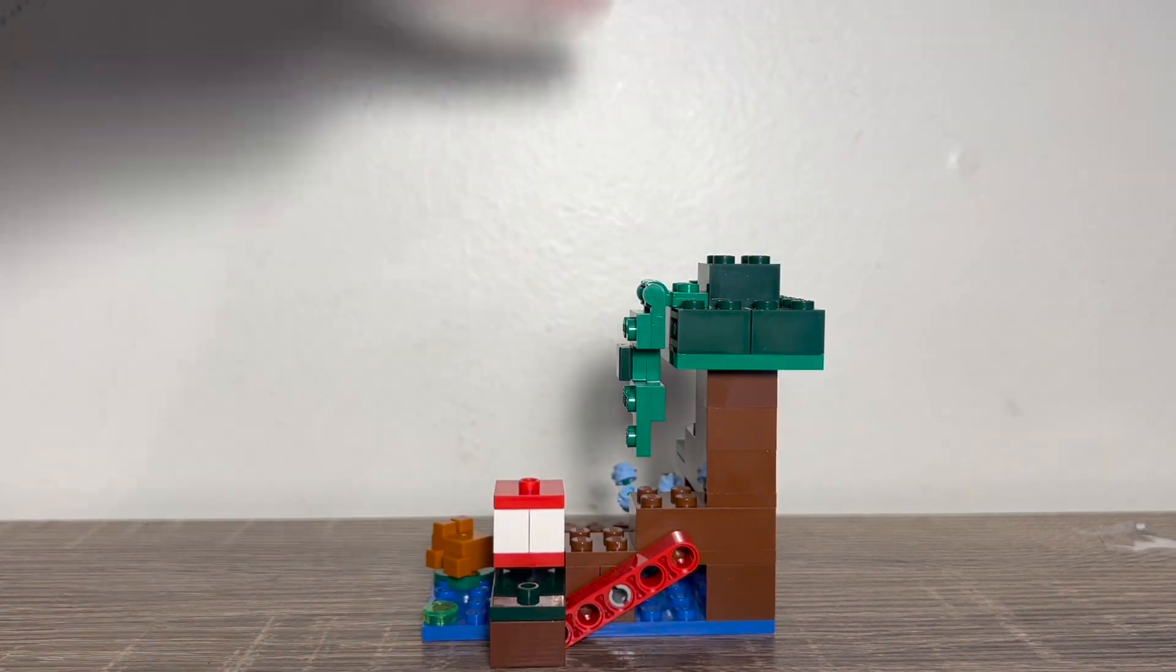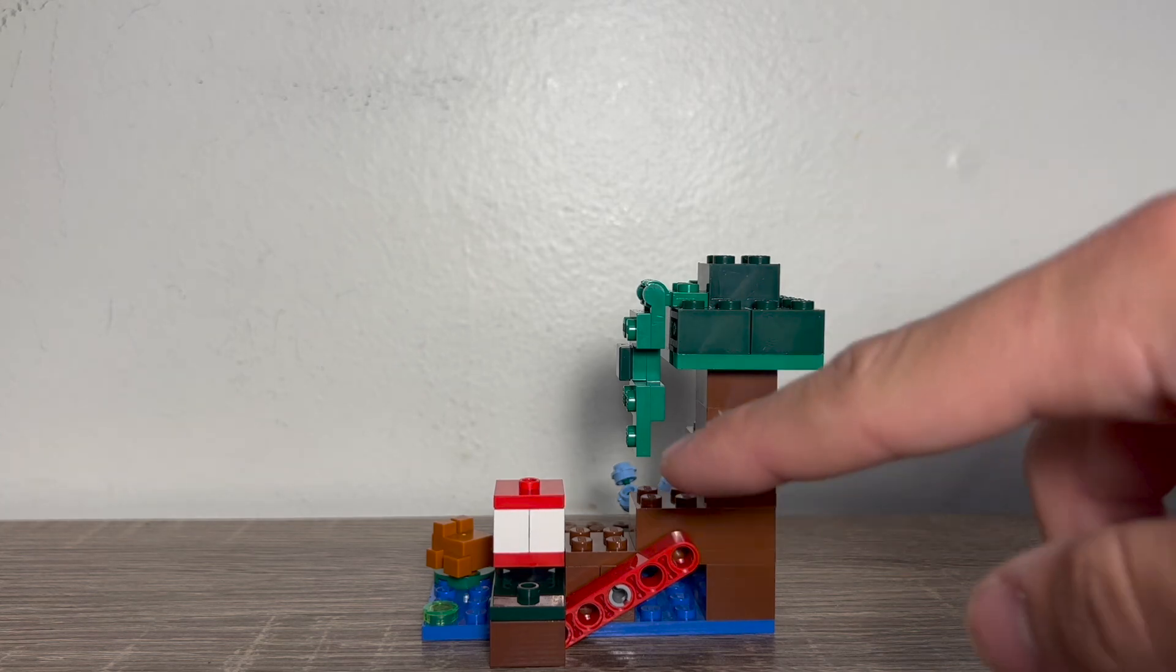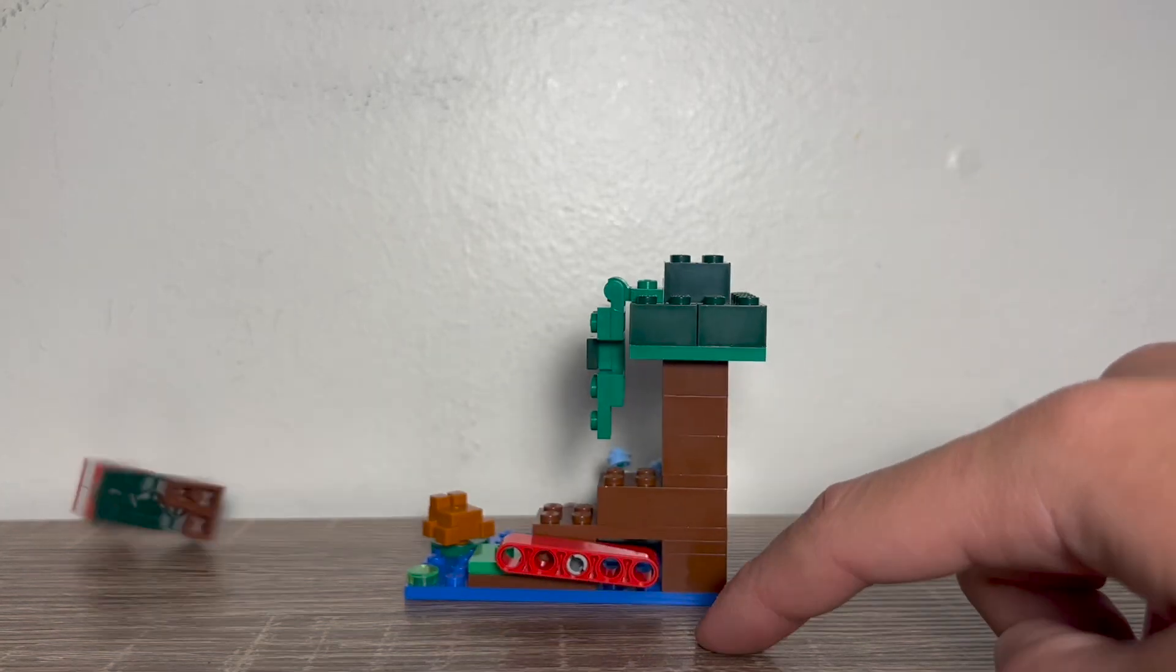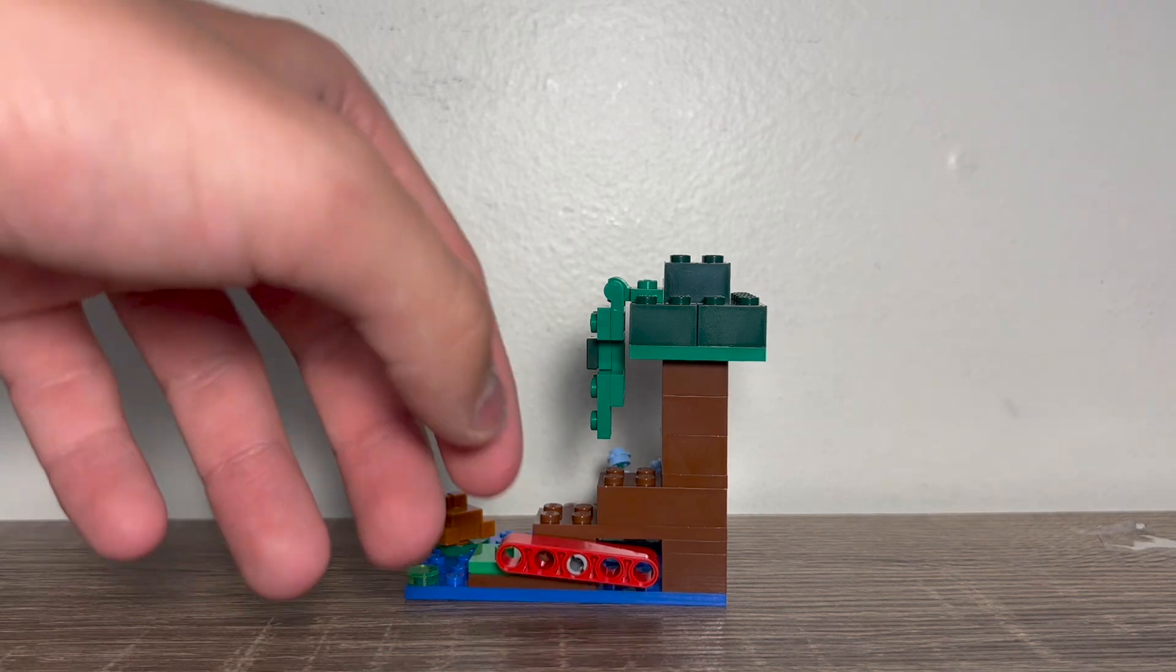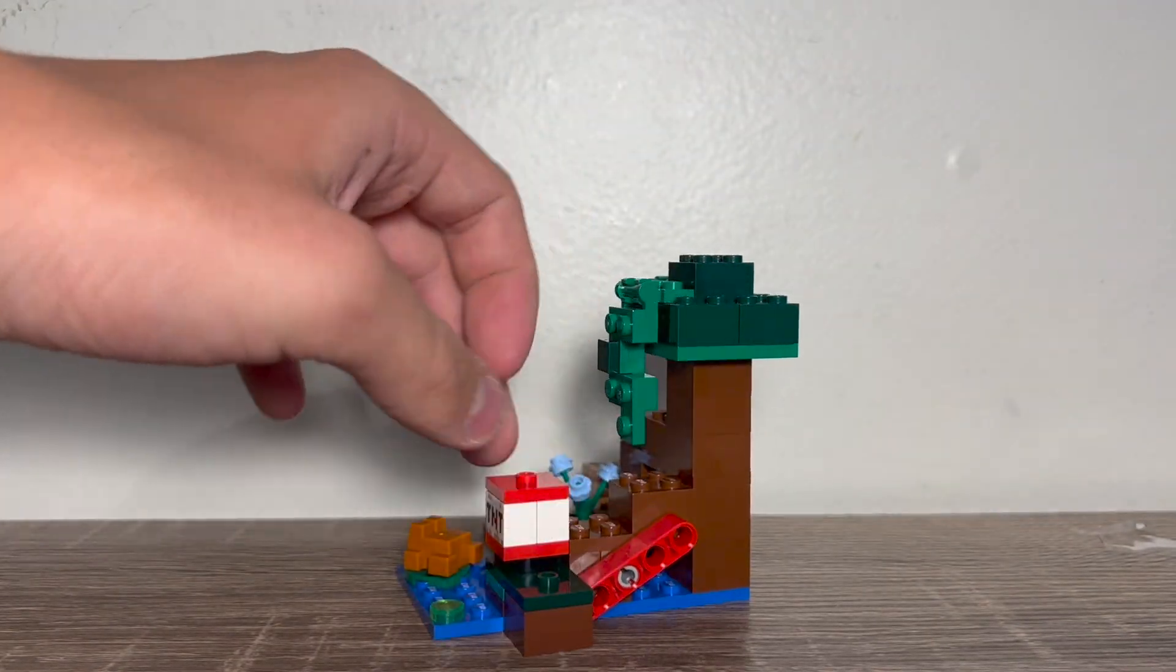And of course, we have the play feature, which is kind of annoying because it's just so big right there. Like, what is that? Why is that so big? And then of course, you press this down, the TNT launches, and these two blocks go flying.